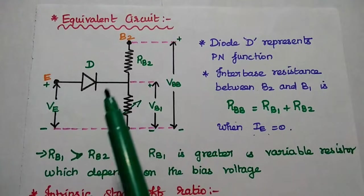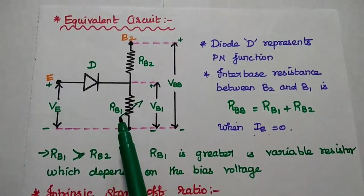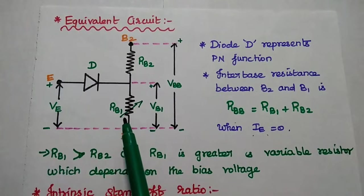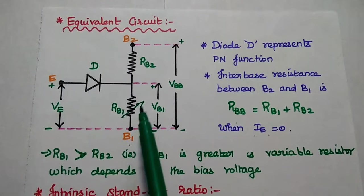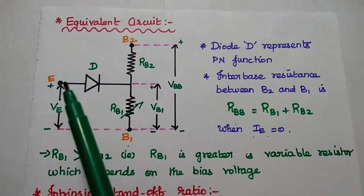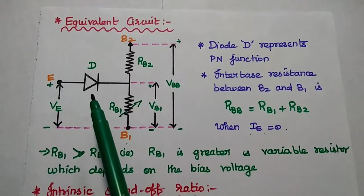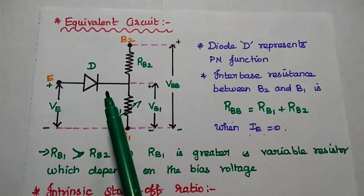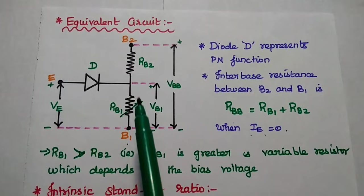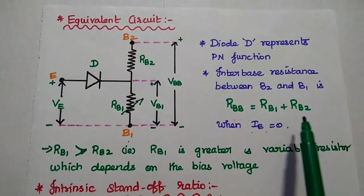Here, RB1 is always greater than RB2, and it is also a variable resistance because it depends on the bias voltage. If we consider the emitter terminal open, there is no current conduction across the diode, so emitter current is equal to 0. Under this condition, these two resistors are connected in series, so the total interbase resistance is RBB = RB1 + RB2.